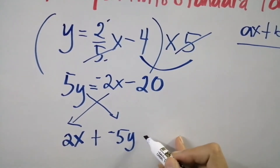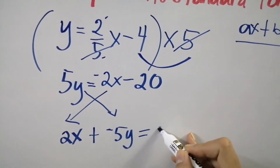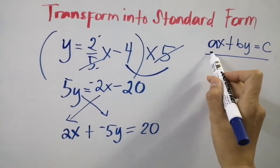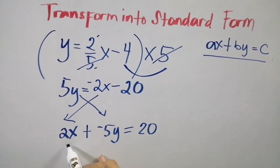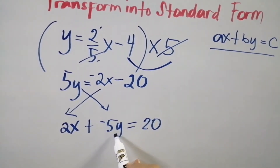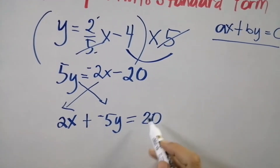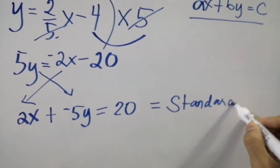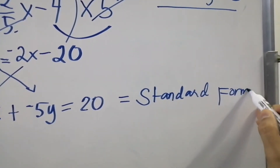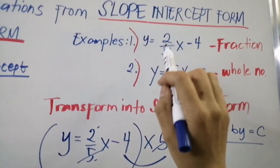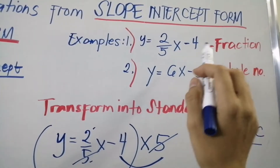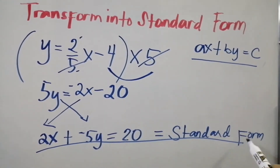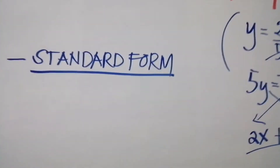Bring down the negative 20 and it will become positive 20. So our a is 2x written in positive, from positive 5y changes to negative 5y, and from negative 20 changes to positive 20. This is now our standard form of the equation. This was our given slope-intercept form in fraction form, and this is our resulting standard form equation.